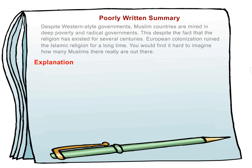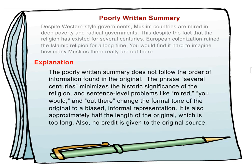Explanation. The poorly written summary does not follow the order of the information found in the original. The phrase 'several centuries' minimizes the historic significance of the religion, and sentence level problems like 'mired,' 'you would,' and 'out there' change the formal tone of the original to a biased, informal representation. It is also approximately half the length of the original, which is too long. Also, no credit is given to the original source.